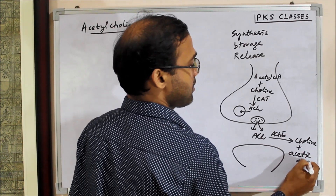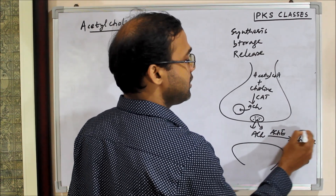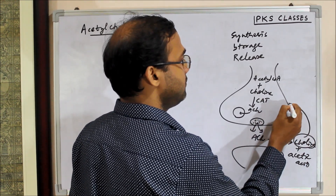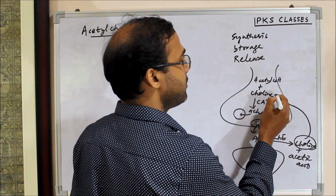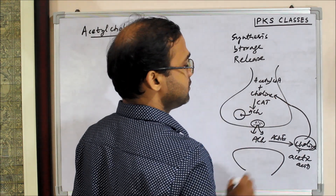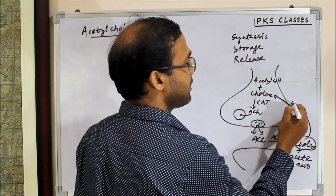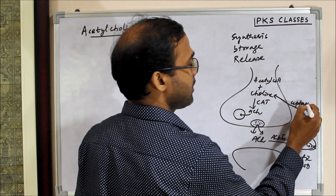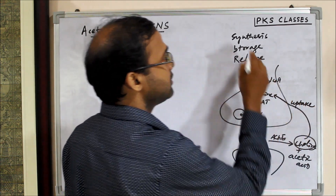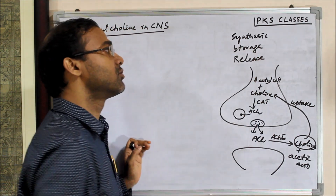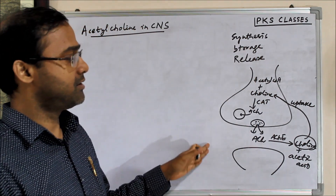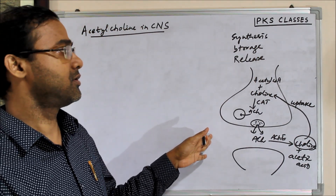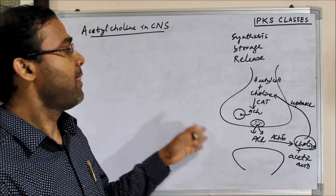This choline can again return back by an uptake mechanism. So this synthesis, storage, and release we have already discussed in the peripheral nervous system.